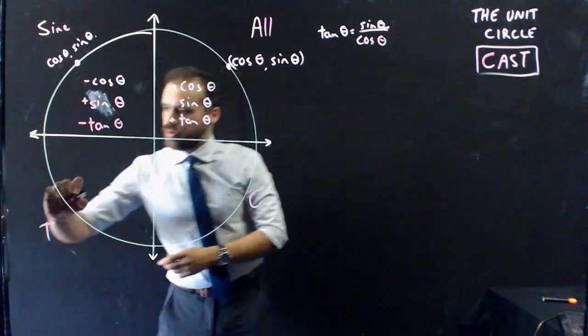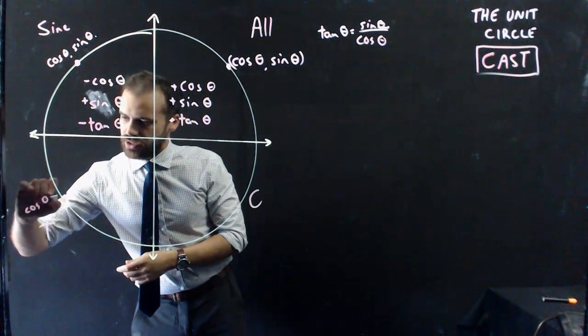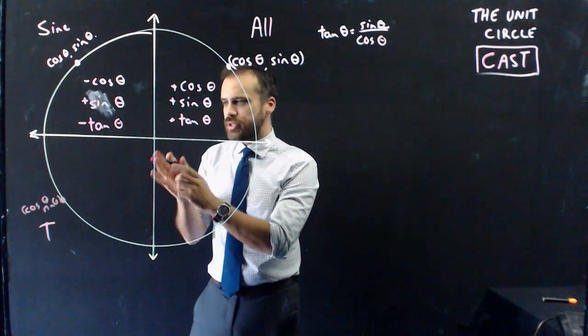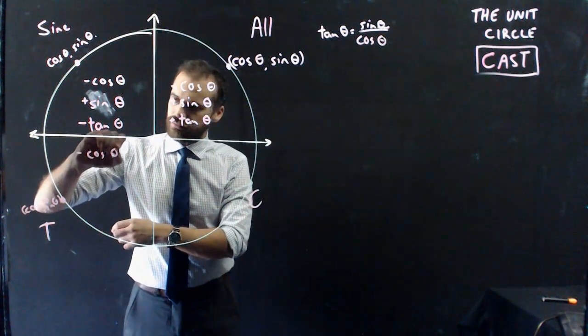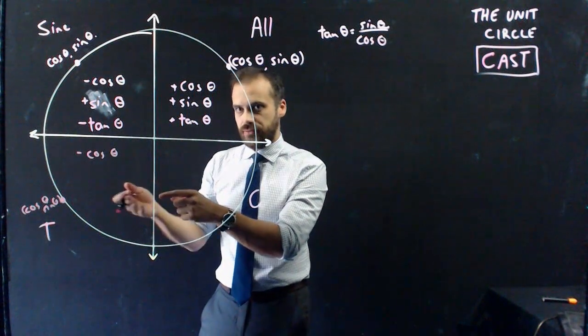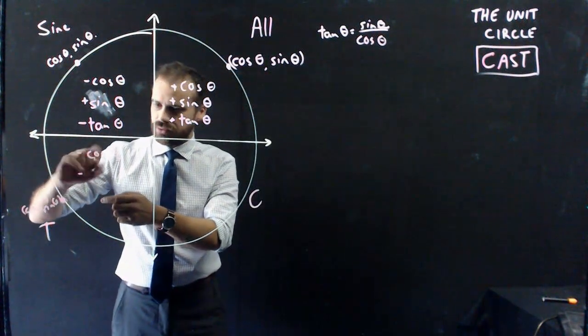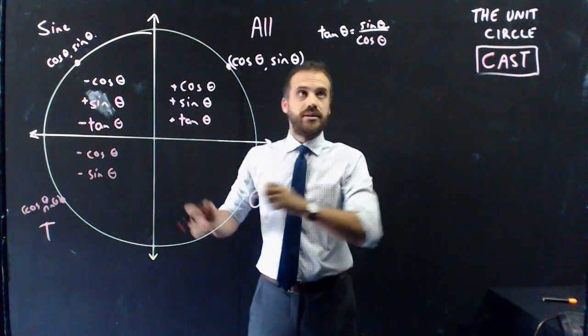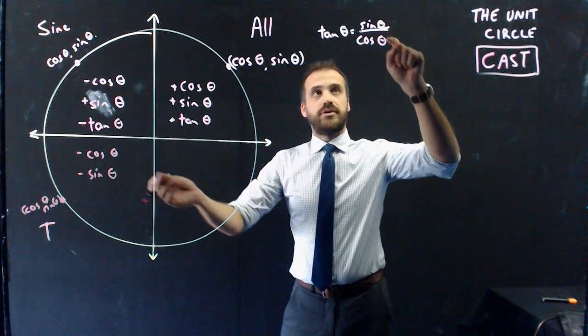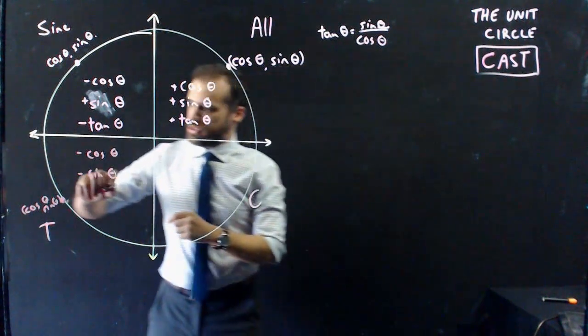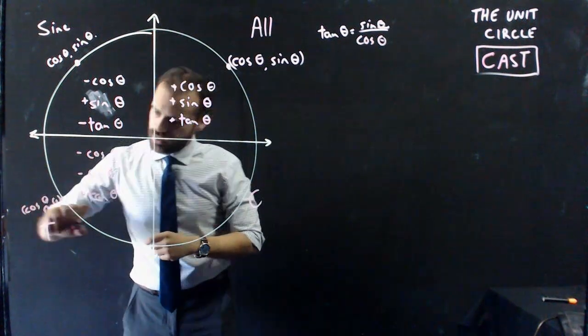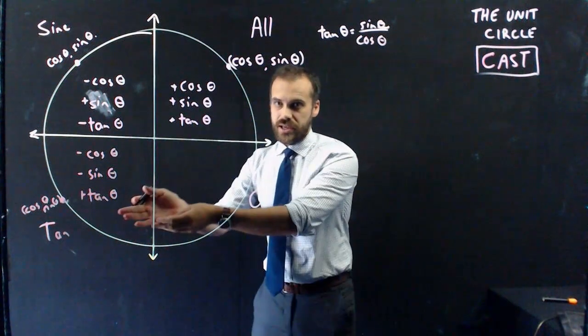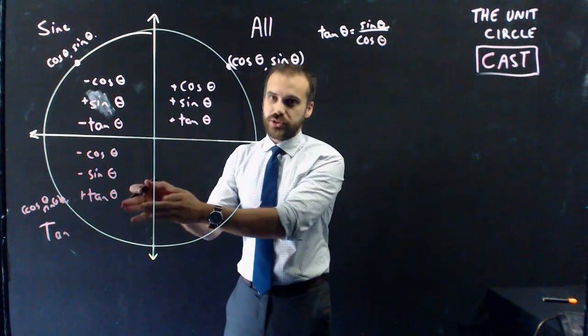Now, let's consider this one for a second. Put a dot here. Obviously, that's cos theta, sin theta. I'm probably going off the board there, but you get the idea. Cos theta is going to be negative. Sin theta is going to be negative, because it's a negative y value and a negative x value. Now, what about tan theta? It's going to be a negative divided by a negative, a negative divided by a negative. It's going to be a positive. C, A, S, T. This is the tan quadrant. Only tan ratios are positive in this quadrant.